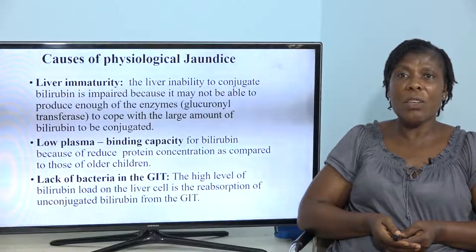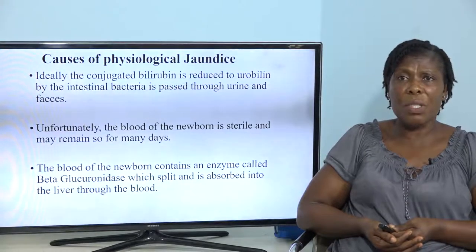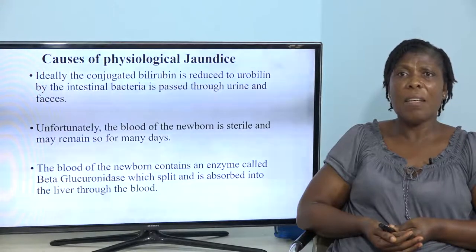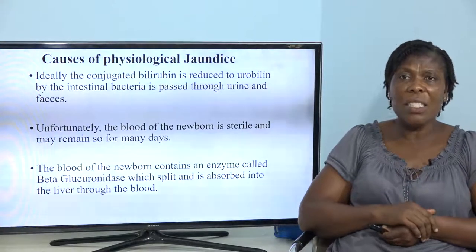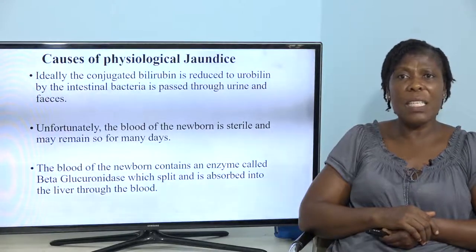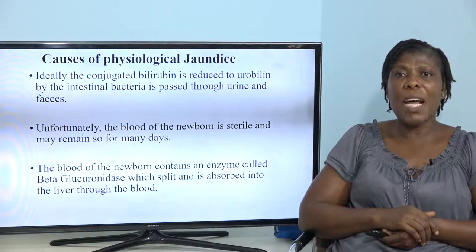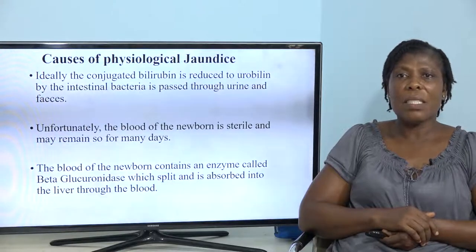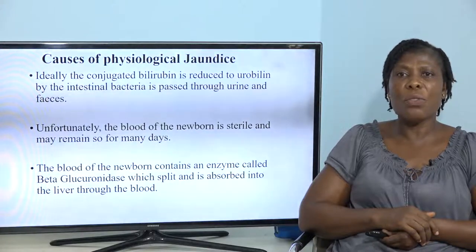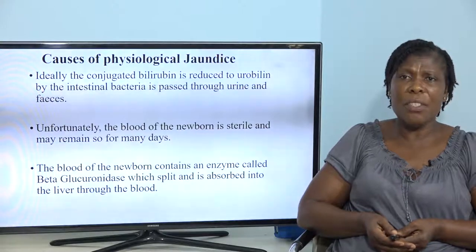The conjugated bilirubin is reduced by intestinal bacteria. But bear in mind, the child does not have this bacteria yet. The blood of the newborn is sterile and may remain so for many days. The blood of the newborn contains an enzyme called beta-glucuronidase, which splits and is absorbed into the liver through the blood. So these factors bring about jaundice in the newborn.